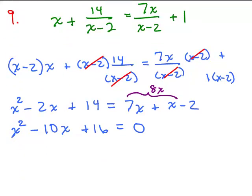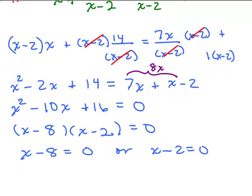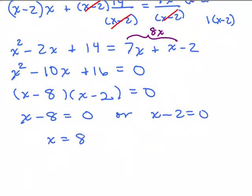Now that I've set it equal to 0, I can factor. That factors to (x - 8)(x - 2) = 0. We set each equal to 0 and solve, so we have x = 8 or x = 2.